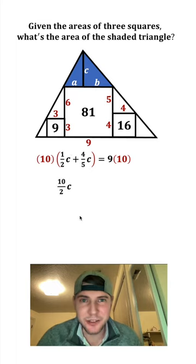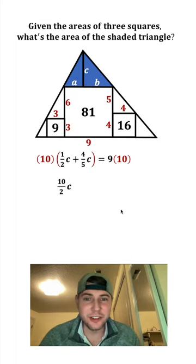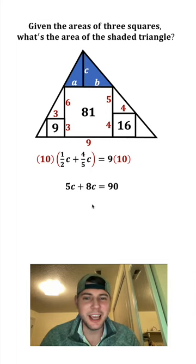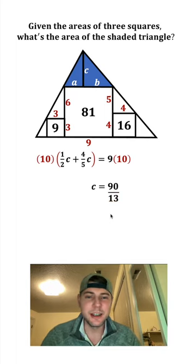10 times 1 half C is 10 halves C. 10 times 4 fifths C is 40 fifths C. And 9 times 10 is 90. 10 divided by 2 is 5. 40 divided by 5 is 8. 5C plus 8C is equal to 13C. Divide both sides by 13, and we get C is equal to 90 thirteenths.